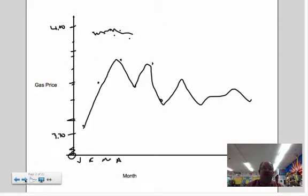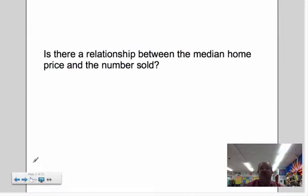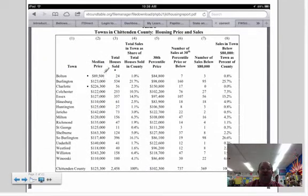Here's some data about Chittenden County houses - the median price. Median is the halfway point: half the houses are lower priced, half are higher priced. In Bolton, Vermont, half the houses on sale were less than $89,500 and half were more. It runs through various ranges - Charlotte might be the highest priced at $226,000. There's a list of the total number of houses sold. We might want to answer a question like: is there a relationship between the median home price and the number sold? Could we predict how many houses were sold from the median price?